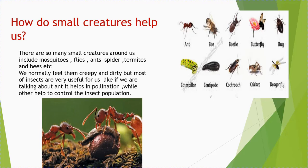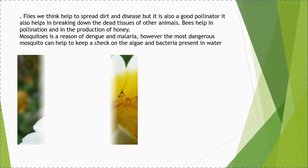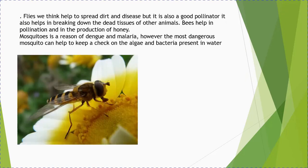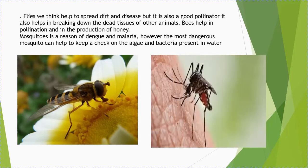For pollination, we get help from ants and sometimes flies. They are also helpful for the production of honey. Mosquitoes, although they spread dengue and malaria, are also important because they help control algae and bacteria present in water.